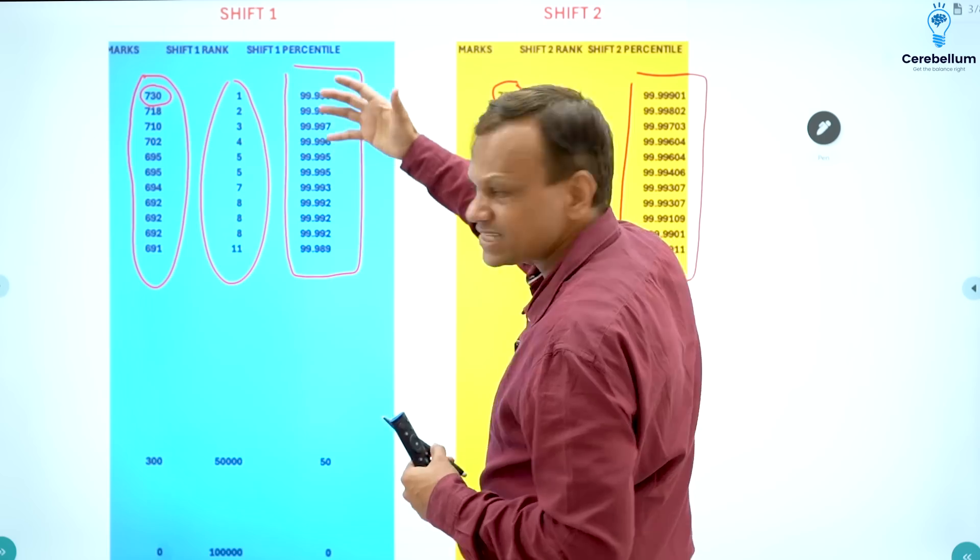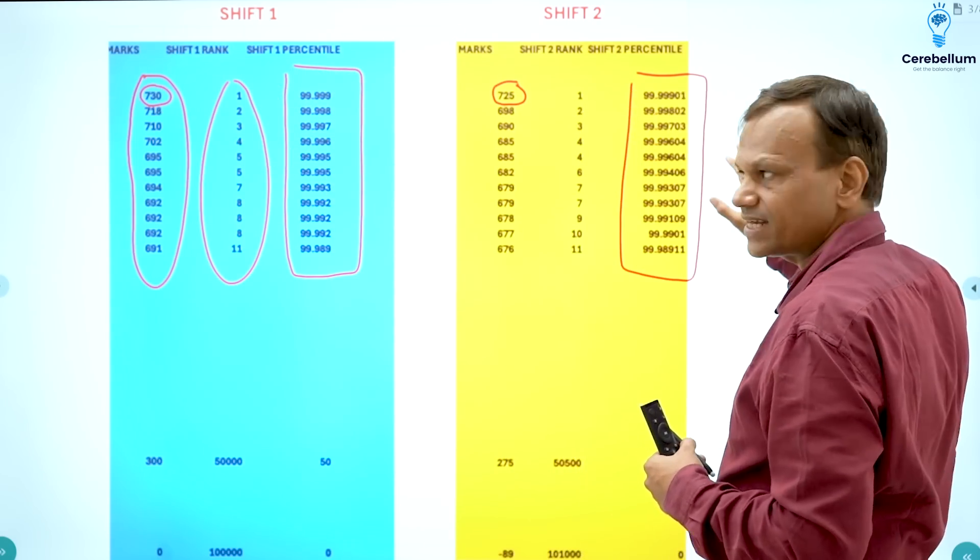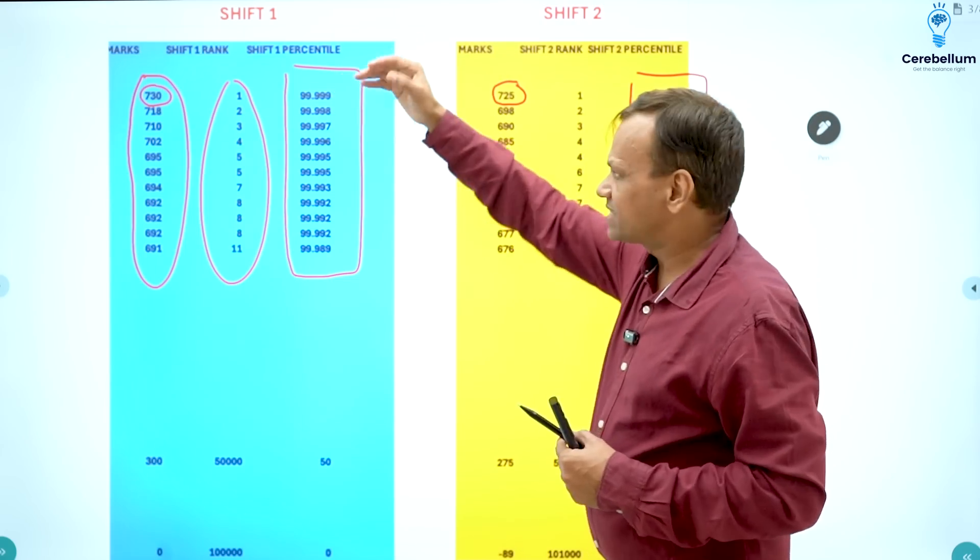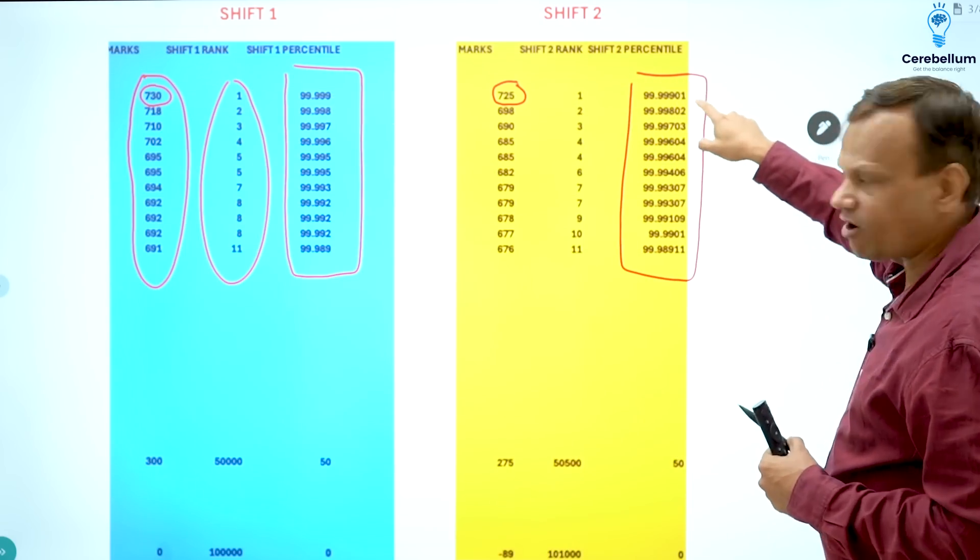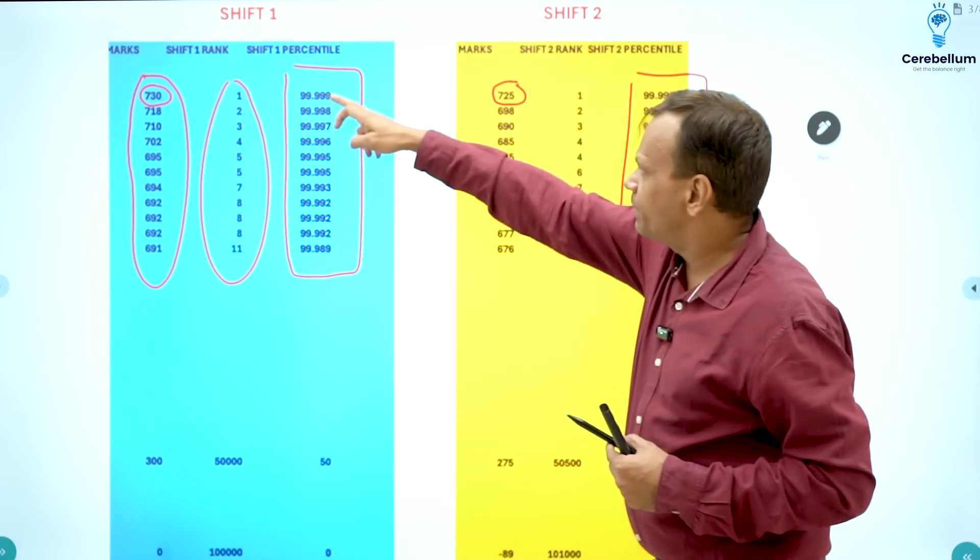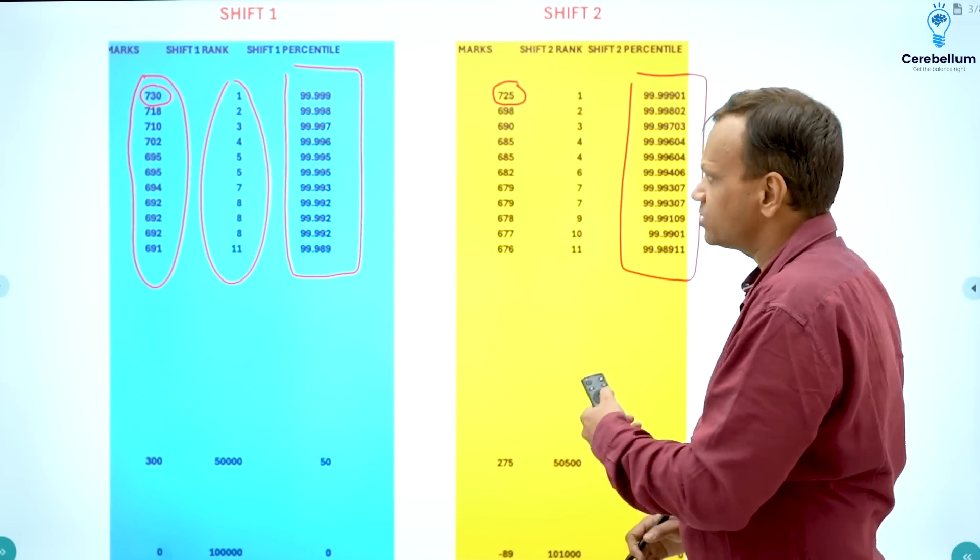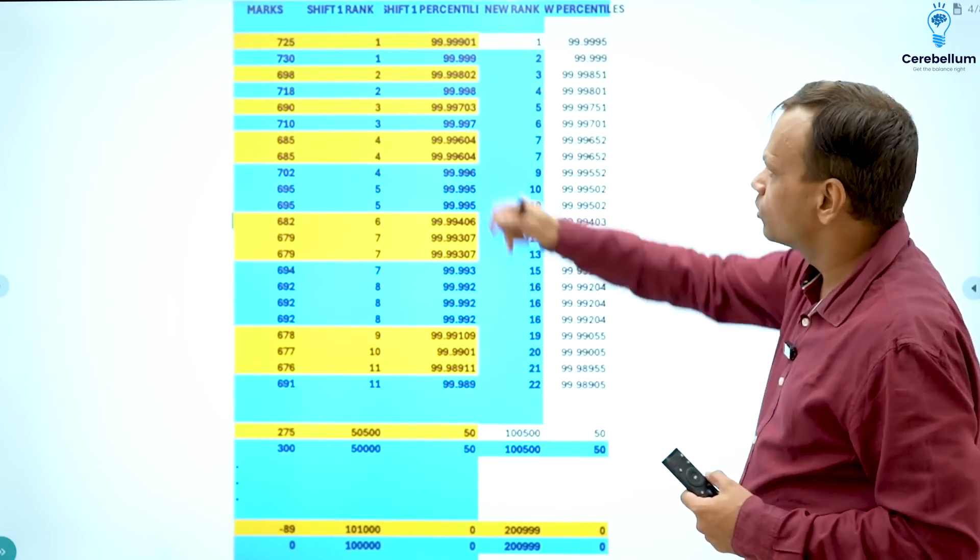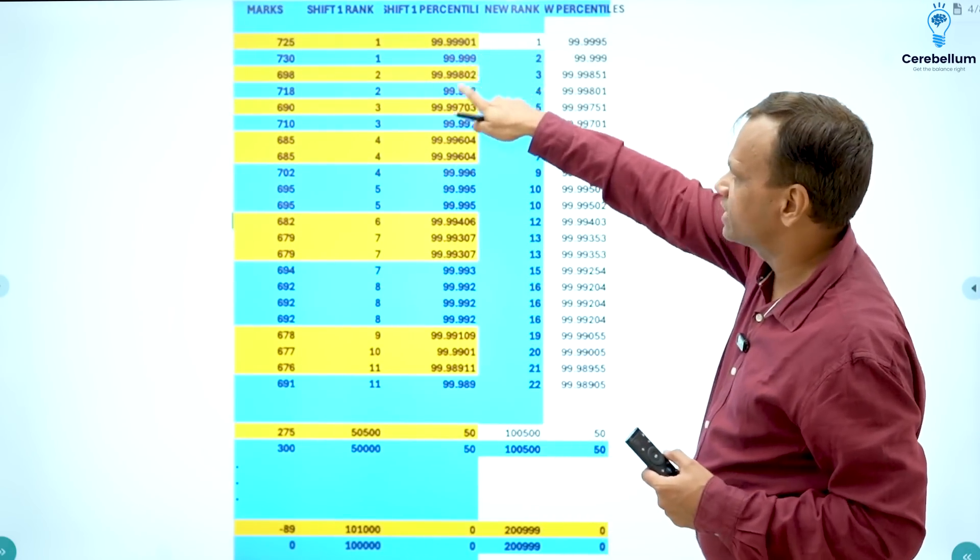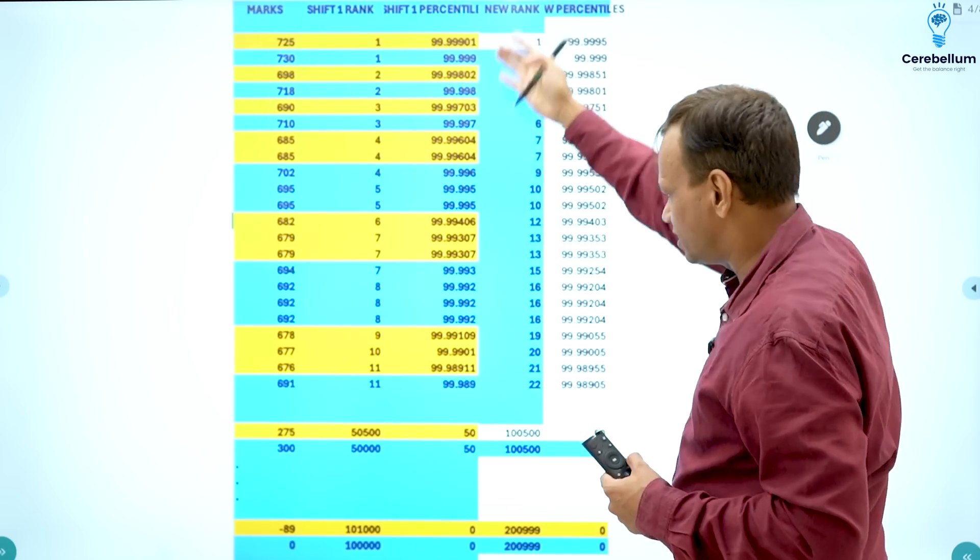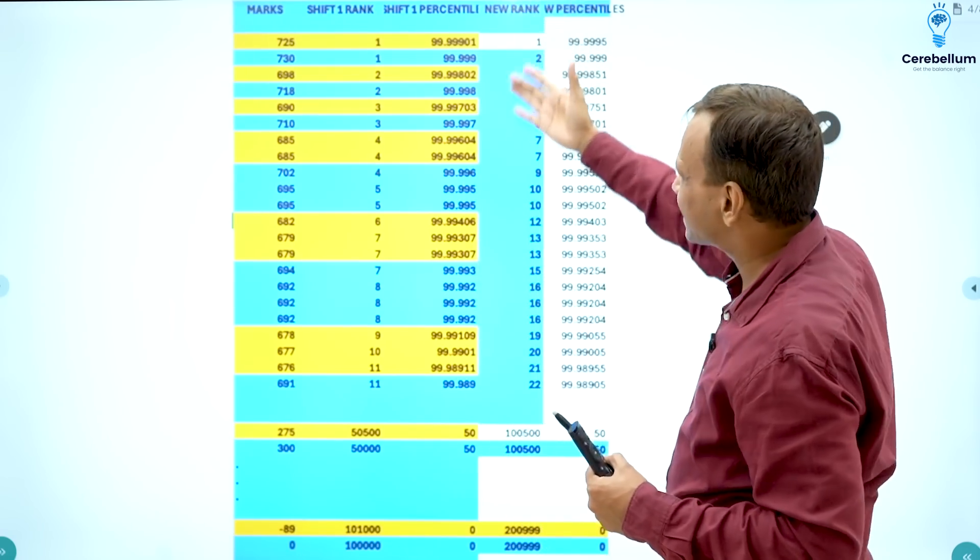So you will arrange these percentiles into sequence. First of all, shift 1 percentile, shift 2 percentiles. Now keep the percentiles in sequence like it is 99.999. This is 99.99901. So this is 1 and it will be kept below this. So this is in blue, this is in yellow. So what I have kept is we have arranged them together. So this is 99.99901. So this was in the second shift. This was in the first shift, then second shift, first shift again.